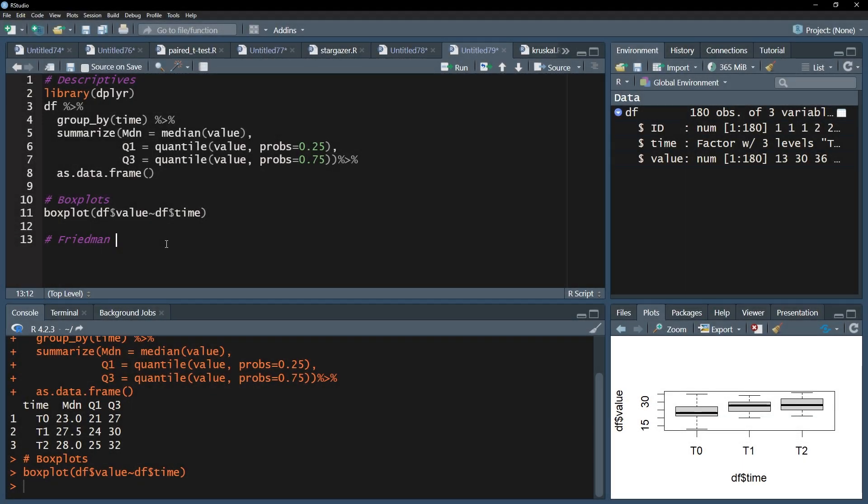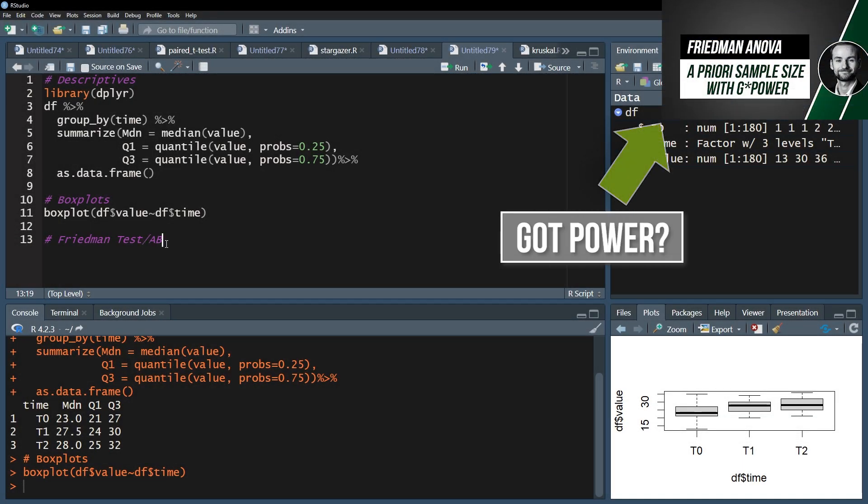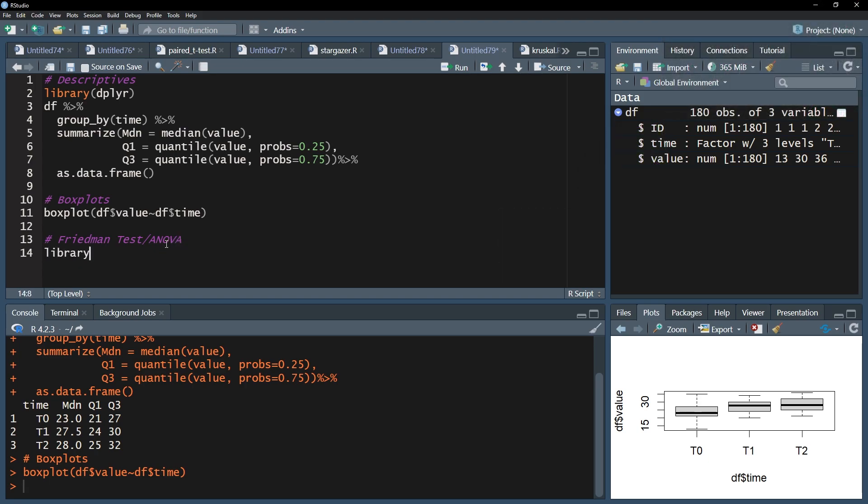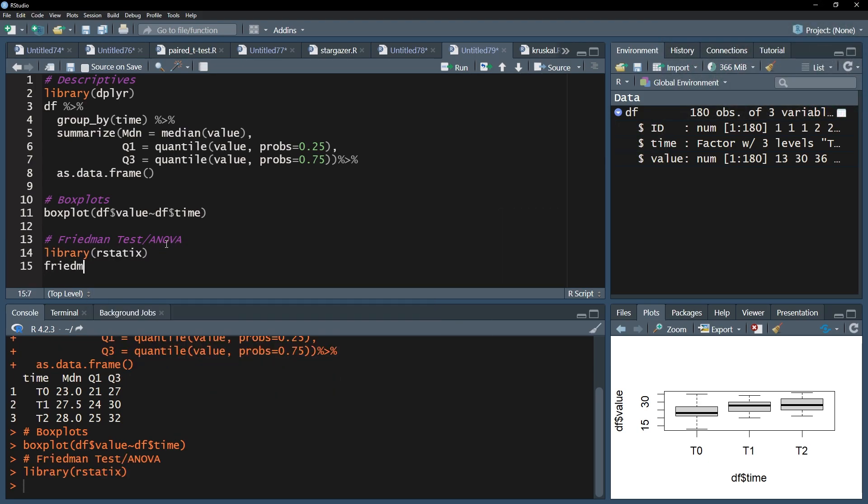Now I want to finally test whether the medians are significantly different from each other or not. I use the Friedman underscore test function of the r-statics package. I start up with the name of the data frame, df in my example. Next, the dependent or test variable has to go in, here it is simply value.